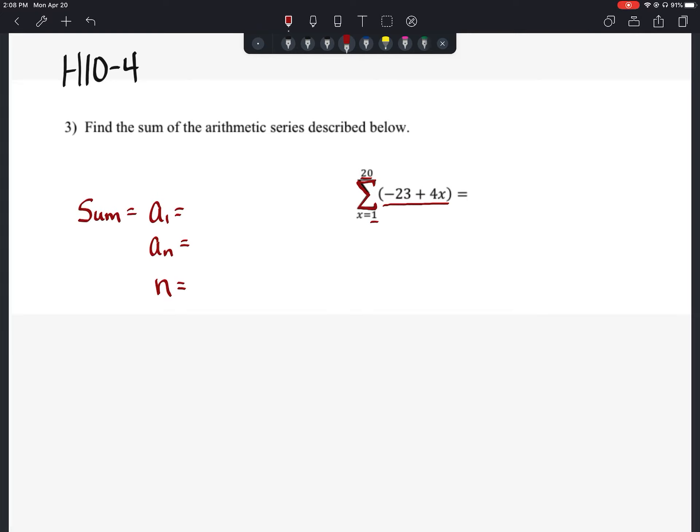So remember, this is just like our a sub n equation here, that expression there. So we can find the first term by taking this 1 and plugging it in to here. So they said if x is equal to 1, well, we'd say, alright, well,